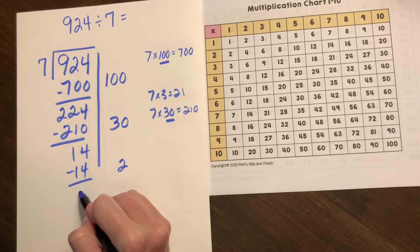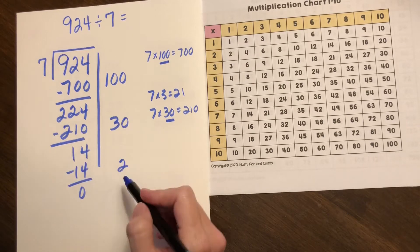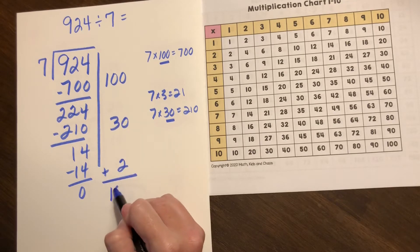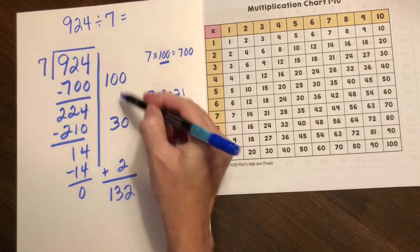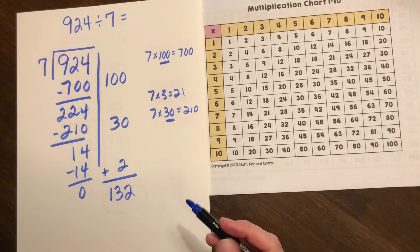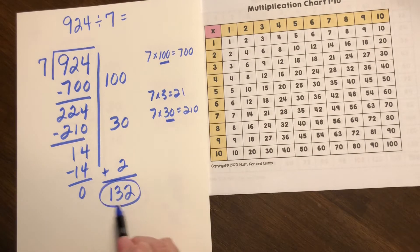And now all of our pages have been divided and we can see by adding up our partial quotients just like you did in your arrays we get 132 pages per day.